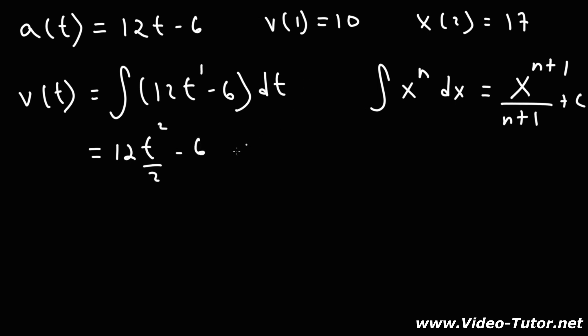Now for the constant 6, you could treat it like this. So negative 6 is equivalent to negative 6 times t to the 0. So this becomes t to the first power over 1, or simply just negative 6t. Then we need to add the constant c.